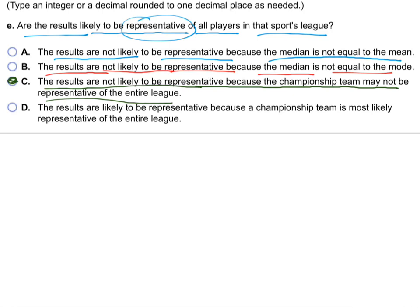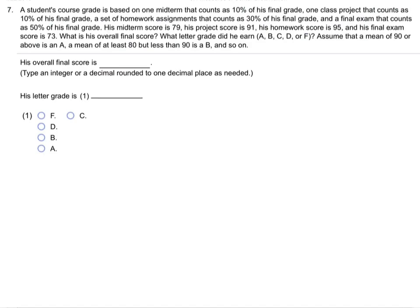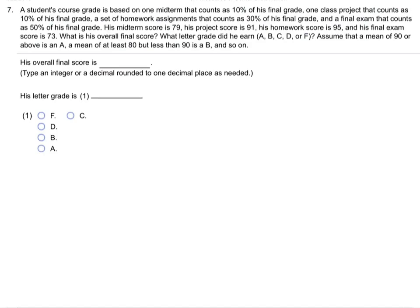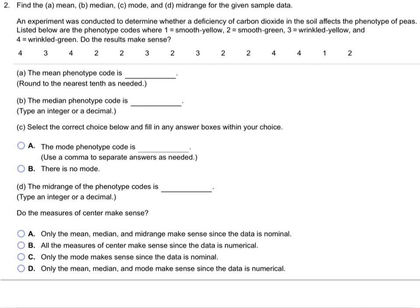On to number two: find the mean, median, mode, and mid-range for the same kind of thing. An experiment was conducted to determine whether a deficiency of carbon dioxide in the soil affects the phenotype of peas. Listed below are phenotype codes: 1 = smooth yellow, 2 = smooth green, 3 = wrinkled yellow, 4 = wrinkled green. Do the results make sense?